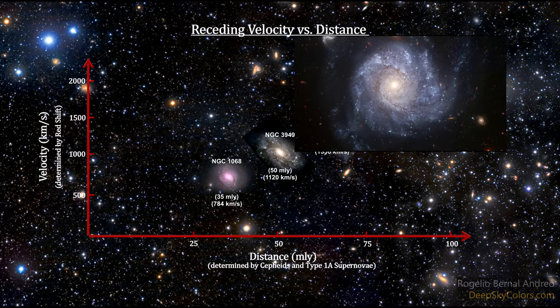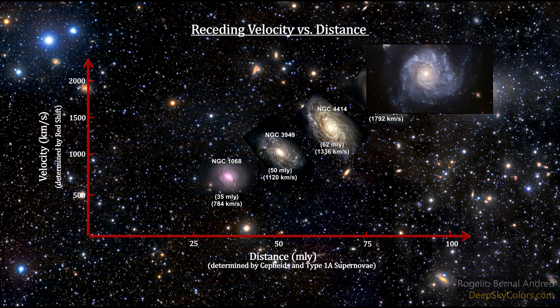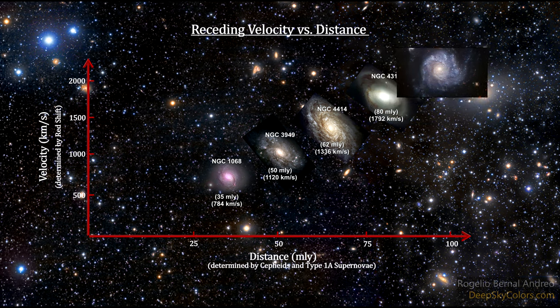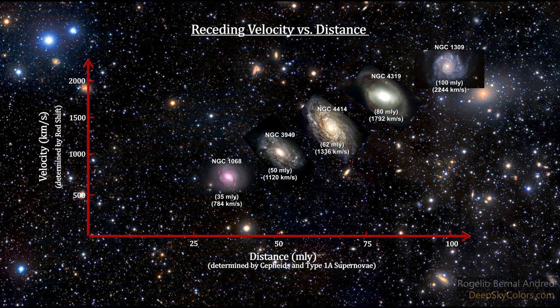NGC 1309, also a galaxy with both Cepheid variables and Type Ia supernova, is 100 million light years away and receding at 2,244 kilometers per second.